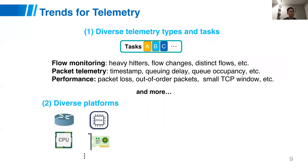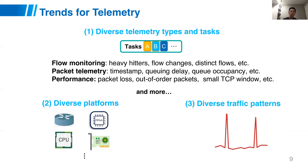Second, we will see diverse network platforms. Traditionally we have CPUs, and network function virtualization also needs telemetry deployed there. We also have new hardware devices — programmable switches, FPGAs, or smart NICs — that can provide programmability with guaranteed high line rates, but usually come with very limited memory and limited memory access patterns. Third, there will be diverse traffic patterns. For example, COVID-19 caused many people to work from home, which dramatically changed internet traffic patterns. So we expect all our telemetry solutions to support a variety of traffic patterns and provide accurate results for anomaly detection.